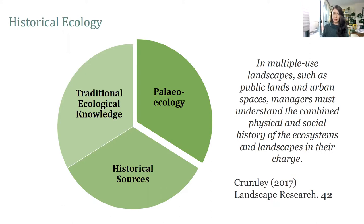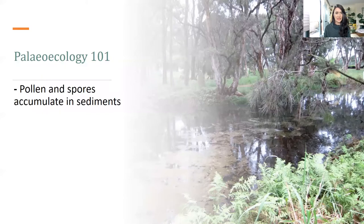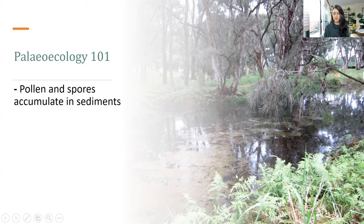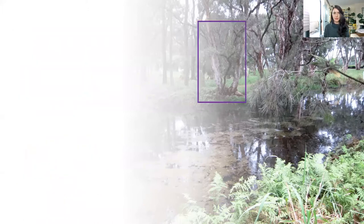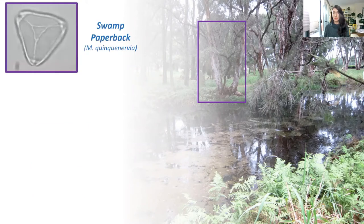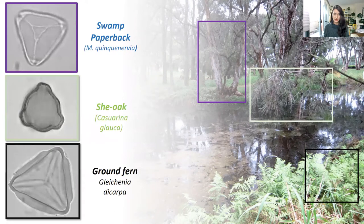There are a couple of disciplines we relied upon for reconstructing this historical ecology. The first is paleoecology, which we used at the Lachlan Swamp site back in 2010. Essentially, pollen from trees, angiosperms and gymnosperms, as well as spores from ferns, are released from parent vegetation and accumulate in wetland sediments through time. Fossil pollen and spores can be isolated from sediments of known ages, dated using radiometric techniques such as radiocarbon dating. Importantly, pollen and spores from different species have different shapes, allowing us to associate pollen types with parent vegetation back through time — for example, Melaleuca quinquenervia pollen looks quite different under the light microscope from Casuarina glauca or ground ferns.